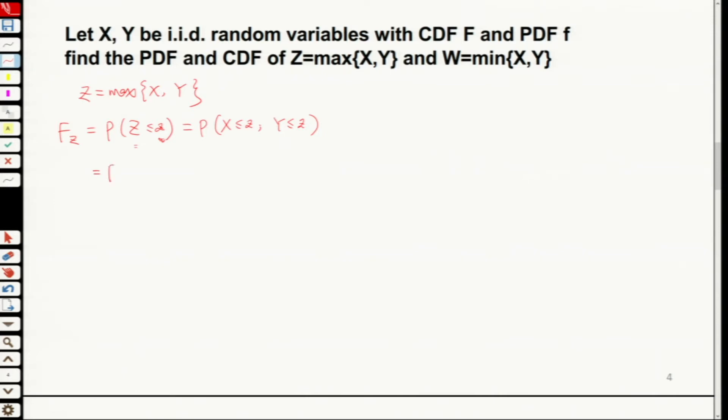So this will equal to independent random variable. That's why we keep talking about independence before. Times probability Y less than z. This is the definition of independence. So this will equal to F because this is F, CDF is F. We didn't specify it for X and Y. Why we didn't specify this F is for X or Y? Because they are identical. These two have the same function. It's F. So over here, we will have the F squared z.